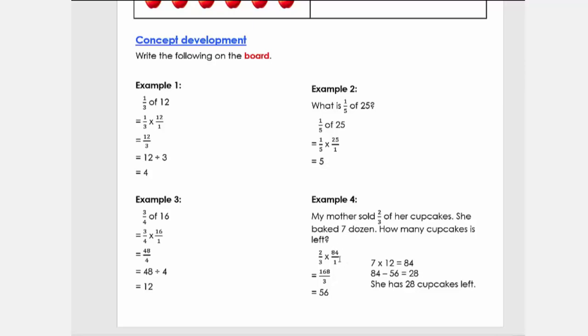Well done. What we did now is we got—because how many cupcakes is left? My mother sold so many, so we need to see how many is left. What we need to do is say 84 minus 56 equals 28, and we got 28 cupcakes left.